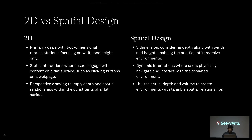In 2D, we don't have a third dimension — everything is flat with static interactions. Whenever a user clicks a button, it happens in a static way with no 3D feel. In spatial design, you have 3D — whenever you touch an object, it reacts to your hand with hover states, highlighting where you are pointing.